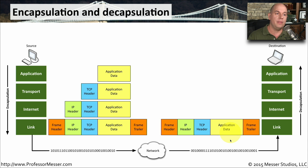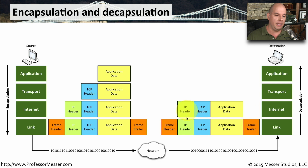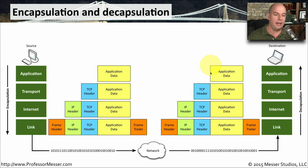Now the decapsulation process occurs. We remove the frame information at the link layer. As we move up, we get rid of the IP header. And then finally, our application removes the TCP header, and it's left with the original data so it can perform whatever task is required by that application.